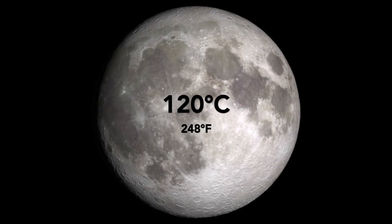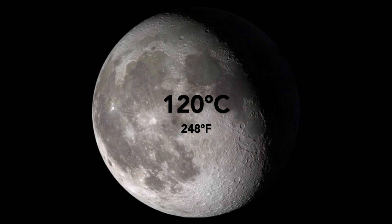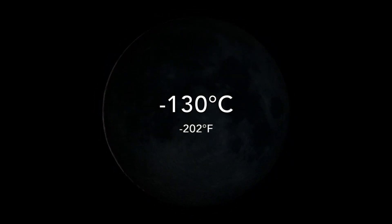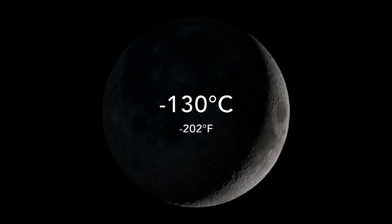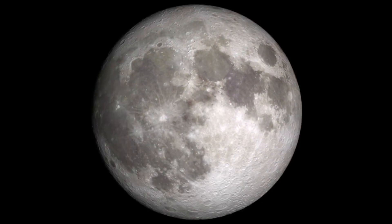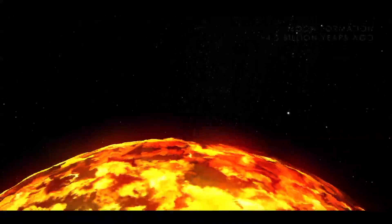During the day, temperatures can go as high as 120 degrees Celsius at the equator. At night, the temperature can drop to minus 130 degrees Celsius. If the surface of the Moon is so inhospitable, underneath the surface, there is hope.